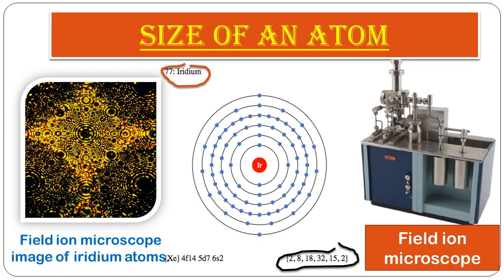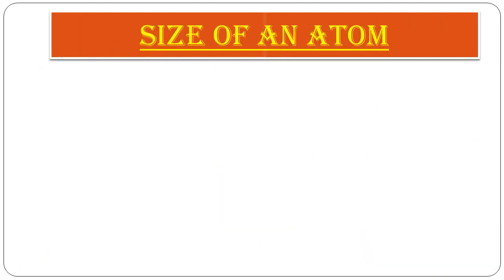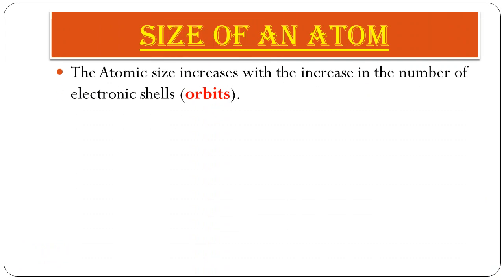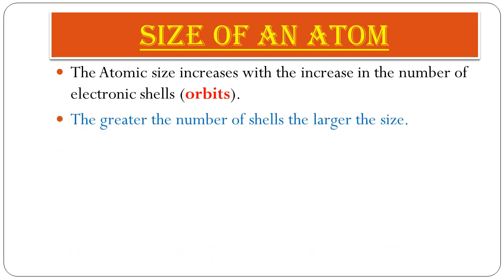The atomic size increases with the increase in the number of electronic shells. The atomic size is directly proportional to the number of electronic shells, or radius. The more electronic orbits an atom has, the greater its atomic size.